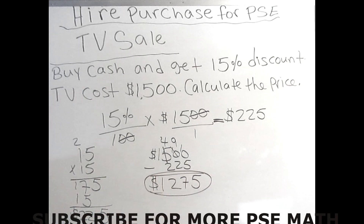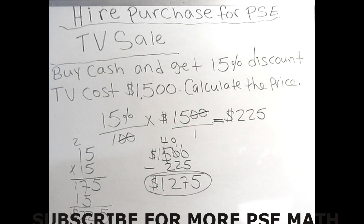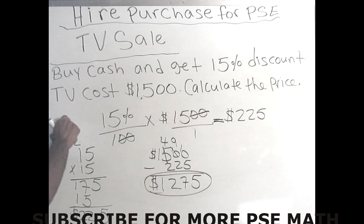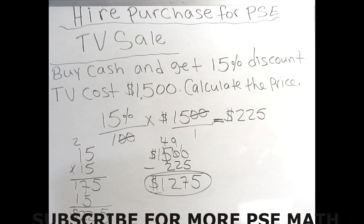The price we're paying for the TV with cash is one thousand two hundred and seventy-five dollars. You'll notice that whenever you're buying something cash and it's a big item, places like Courts will give you a discount. So instead of $1500, when you purchase the TV cash you're going to pay $1275. Once again, remember we're purchasing this TV that is on sale, and the problem says buy it cash and get 15% discount, with the TV costing $1500.